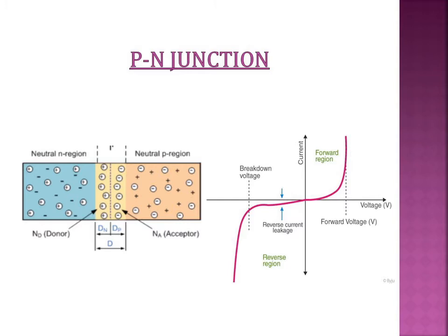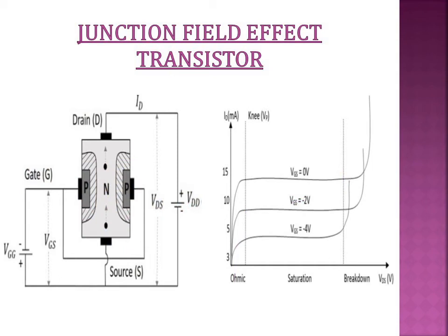Next is the Junction Field Effect Transistor. The device has three terminals: source, drain, and gate. There are two voltages applied across the device, namely gate-to-source voltage (VGS) and drain-to-source voltage (VDS). The gate-to-source voltage is applied such that the source is made positive with respect to the gate, and VGS always has to be smaller than VDS so as to make the source negative with respect to the drain. The purpose of the source is to emit electrons and of the drain is to collect electrons. The JFET shown in the figure is N-channel, so electrons are the majority carriers.